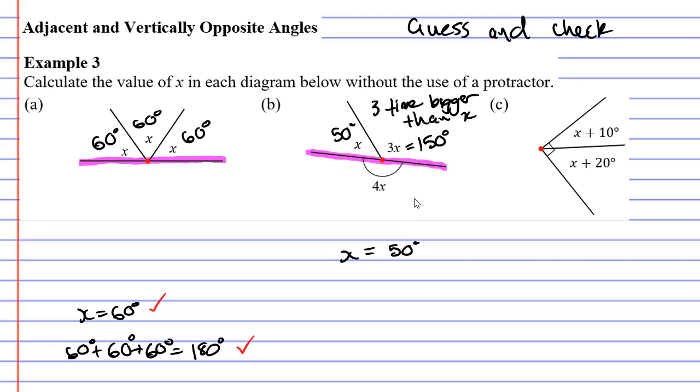Because if I draw a straight line, these two should add up to 180. When in fact 50 plus 150 equals 200 degrees. So that's got to be wrong. 50 is definitely not the solution for x. So let's try something else.